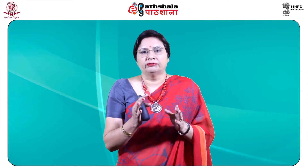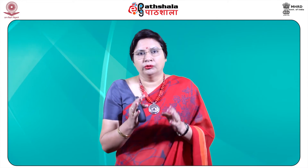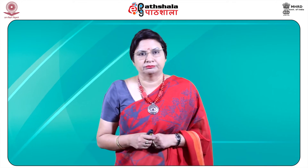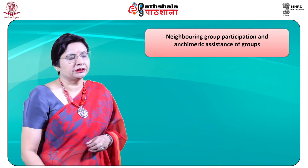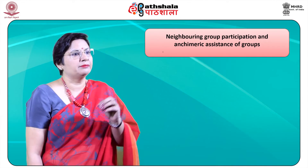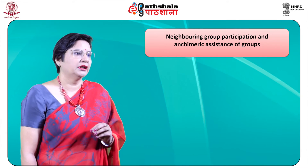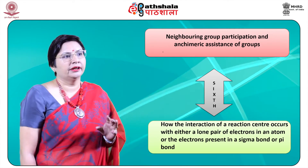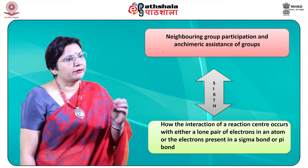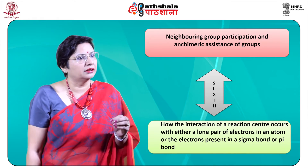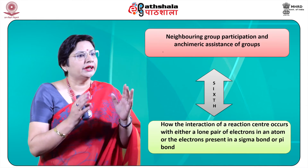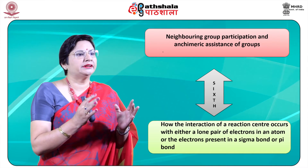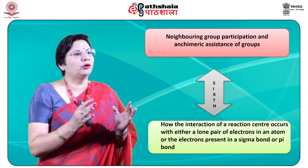After this we will move to another concept which is neighbouring group participation. Neighbouring group participation and anchimeric assistance of groups shall be discussed in the sixth week. Here we will see how the interaction of a reaction centre occurs with either a lone pair of electrons in an atom or the electrons present in a sigma bond or pi bond of the group.